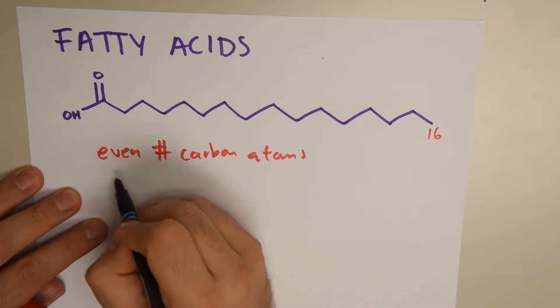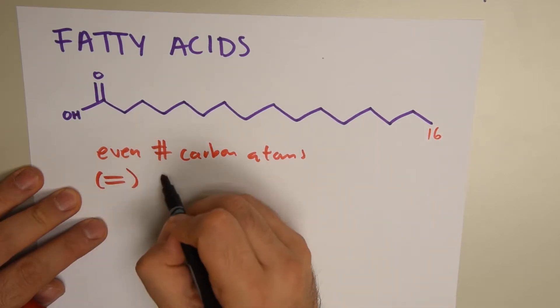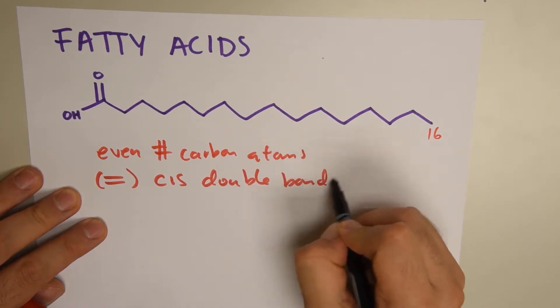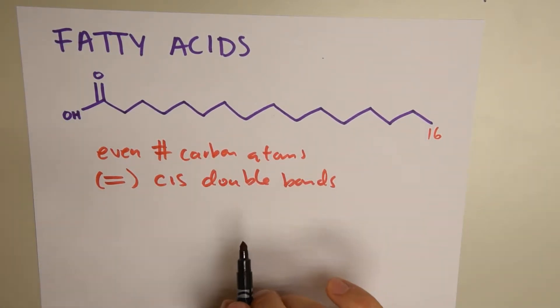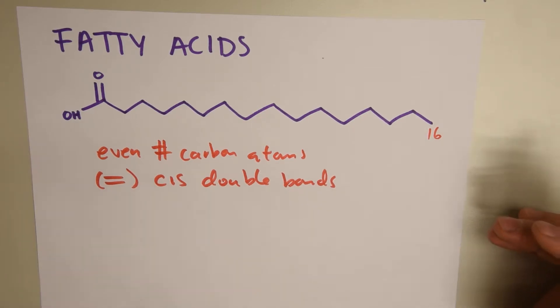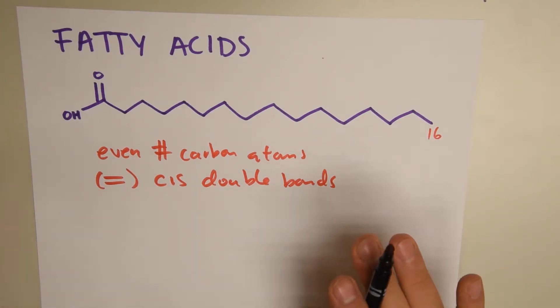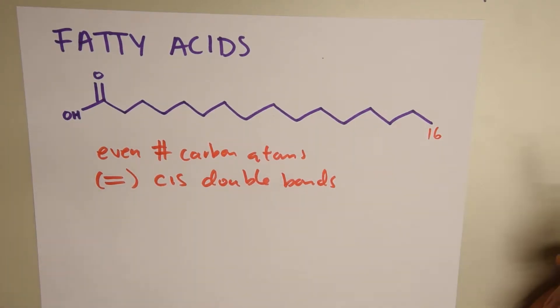When they have double bonds, double bonds tend to be cis double bonds. As a curious fact, when we have trans double bonds, that's what we see in the media as trans fat. Trans fat is usually not good for your body because it's hard to be processed. The normal fatty acids we should consume should be cis fats, which means the double bond forms a little basket.